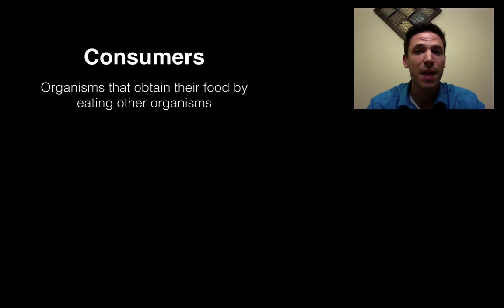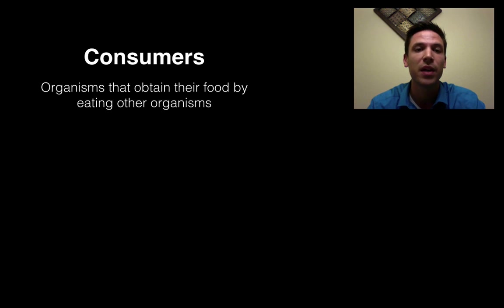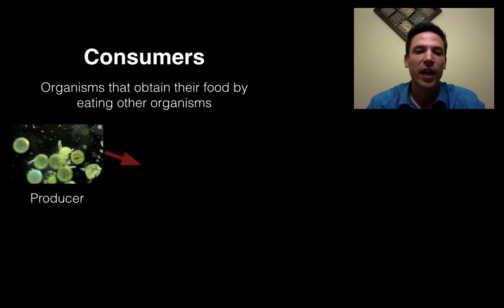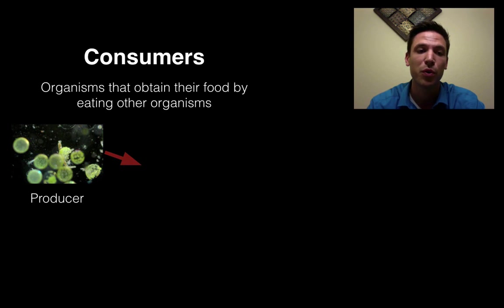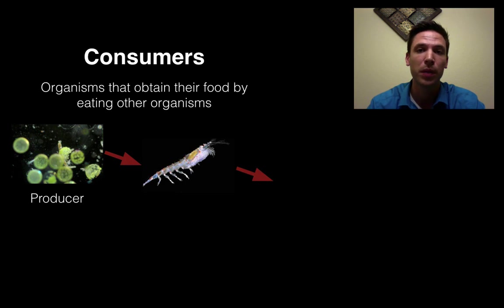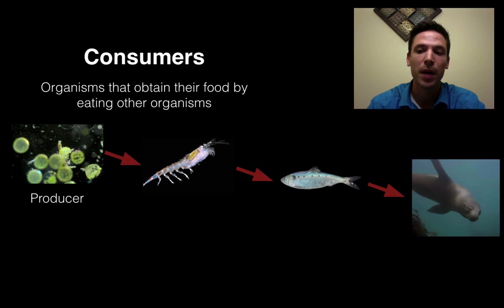What about organisms that can't make their own food, like us? I can't make my own food in my cells, so therefore I am called a consumer. A consumer is an organism that obtains its food by eating other organisms. Let's take a look at a simple aquatic food chain. We start with our producer — phytoplankton, floating in surface waters doing photosynthesis. They are eaten by a consumer: zooplankton or krill. That krill will be eaten by a fish, and that fish in turn will be eaten by a seal.